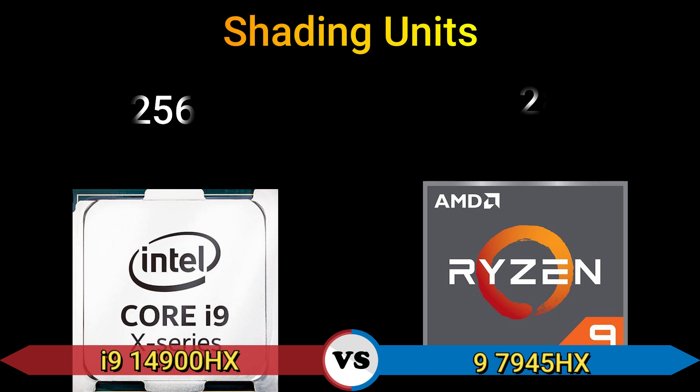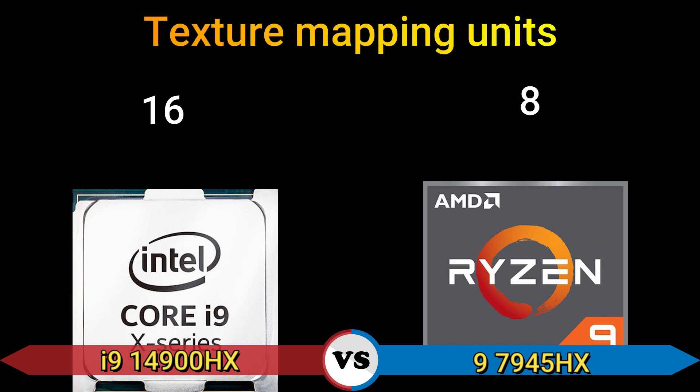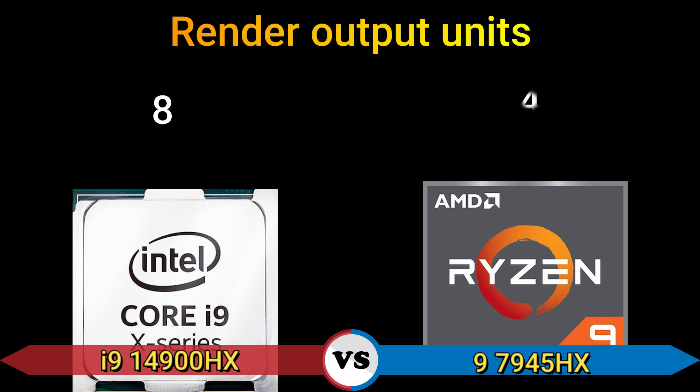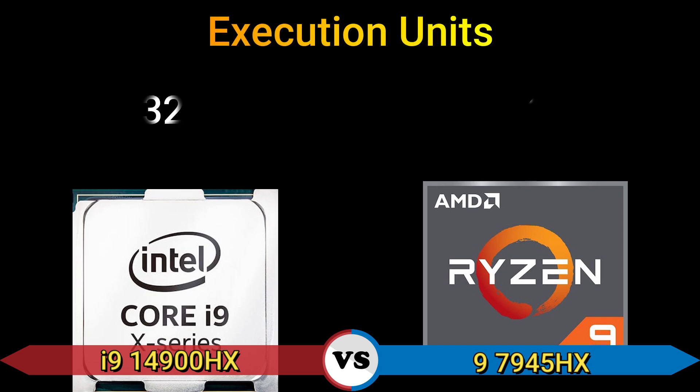Shading units: 256 and 128. Texture mapping units: 16 and 8. Render output units: 8 and 4. Execution units: 32 and 2.